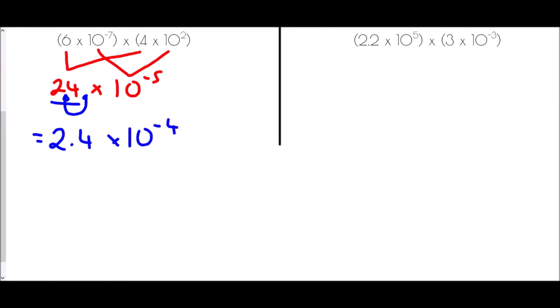In the final multiplication example, we have 2.2 times 3, which gives 6.6. Then 10 to the power of 5 times 10 to the power of negative 3 — adding the powers: 5 plus negative 3 is the same as 5 take away 3, giving 10 to the power of 2. So the answer is 6.6 times 10 squared.